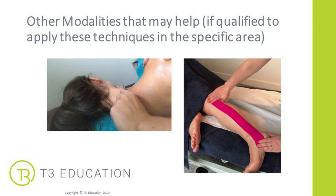Instrument-assisted massage can be used in the sub-acute and proliferation phase, as long as there is no swelling — science suggests it helps improve fibroblast activity and calm the nervous system to improve movement. If qualified to use tools with movement, that's another modality to consider. Taping is also a great way to combine with treatment throughout all phases to help improve the healing process, reduce pain, help clients move more and feel better sooner. Ensure you are fully qualified before adding either modality to your sports massage techniques.